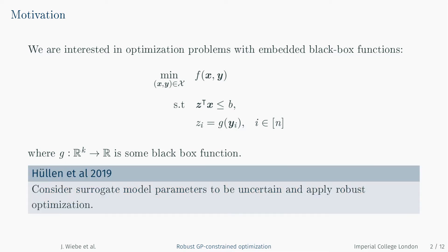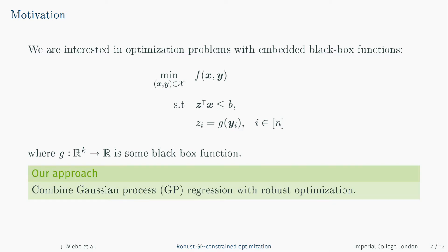This uncertainty can lead to inadequate surrogate models, which can lead to solutions that are not feasible in practice. One approach that can avoid this is suggested in a recent contribution by Hüllen et al., which addresses uncertainty by replacing black box functions with surrogate models and considering the parameters of those models to be uncertain. In this work, we propose a different approach: we model the black box function by stochastic models, in particular standard Gaussian processes and warped Gaussian processes, and develop a method for robust optimization of these models.